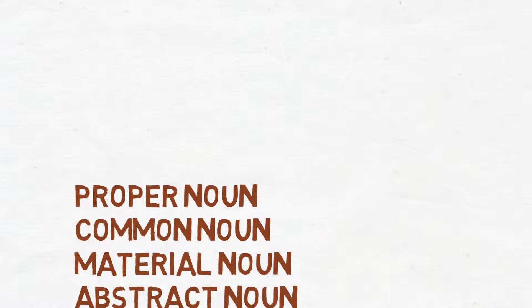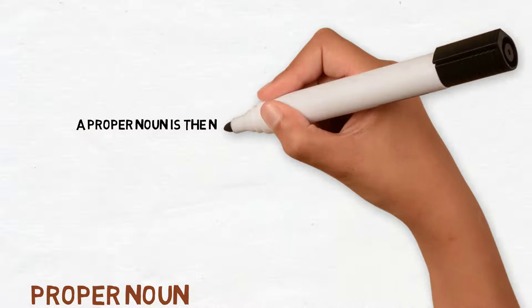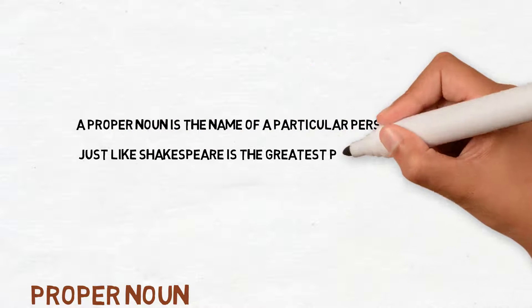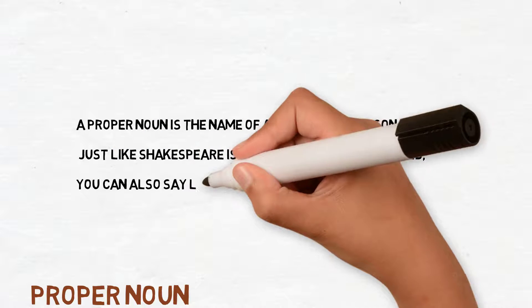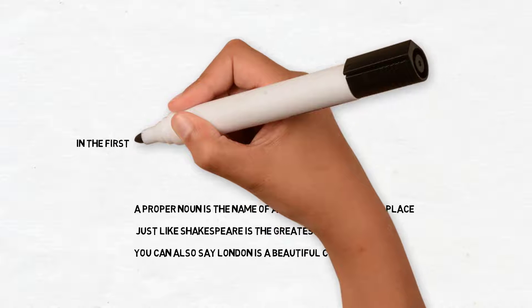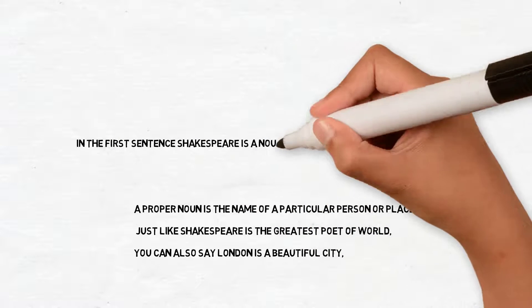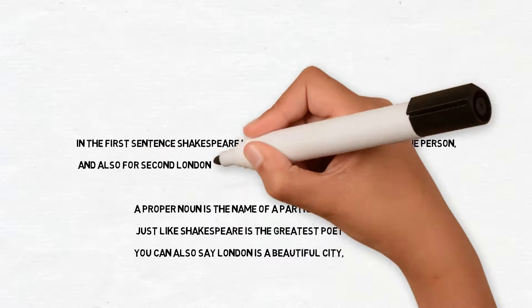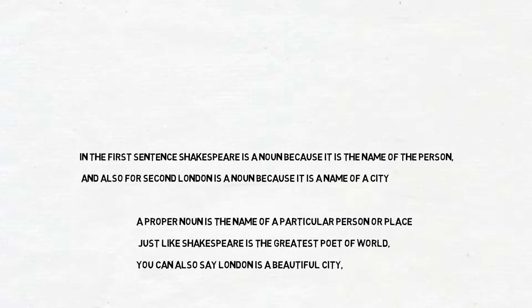So, let me explain all. First, proper noun. A proper noun is the name of a particular person or place, just like Shakespeare is the greatest poet of the world. You can also say London is a beautiful city. In the first sentence, Shakespeare is a noun because it is the name of the person, and also for the second, London is a noun because it is a name of a city.